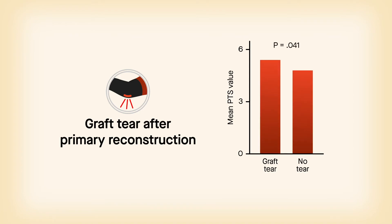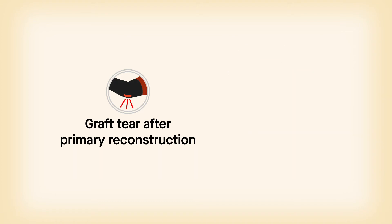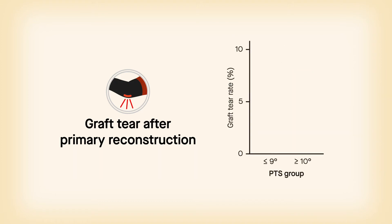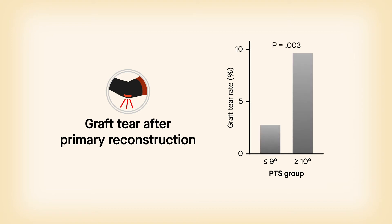Patients experiencing graft tear after primary ACL reconstruction surgery showed statistically significantly higher mean PTS values than patients without subsequent tear. And patients with PTS values of 10 degrees or higher had a statistically significantly higher rate of graft tear than patients with PTS values of 9 degrees or lower.